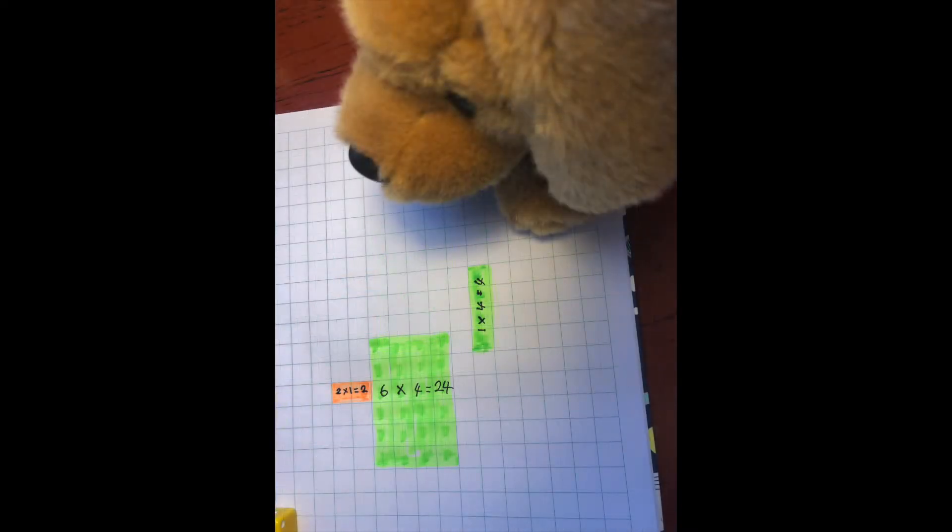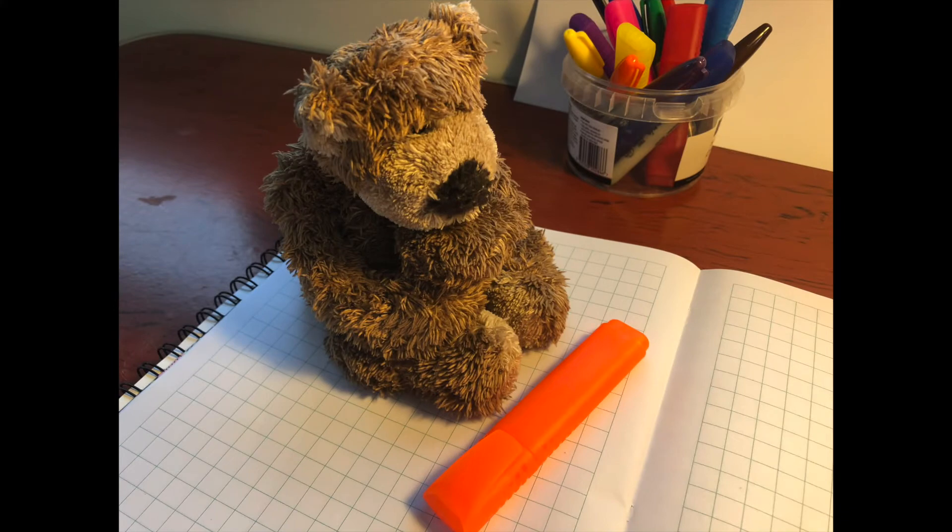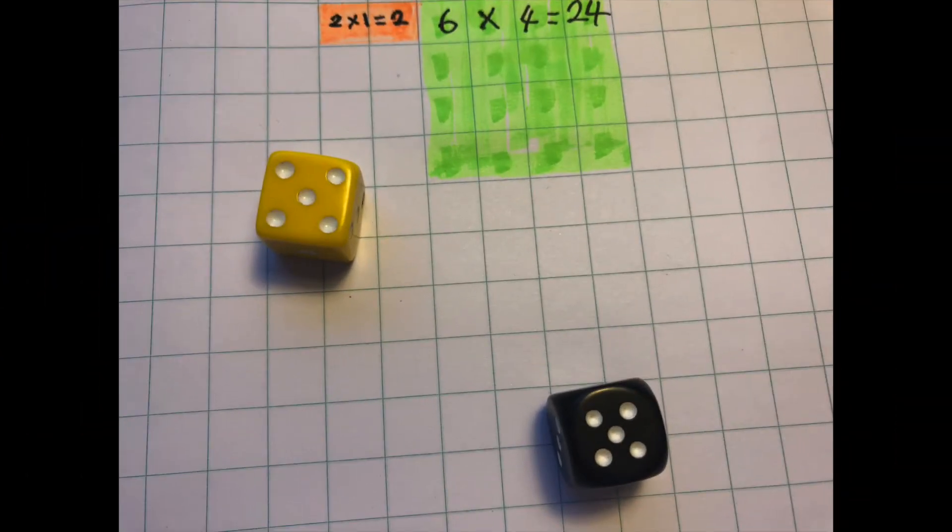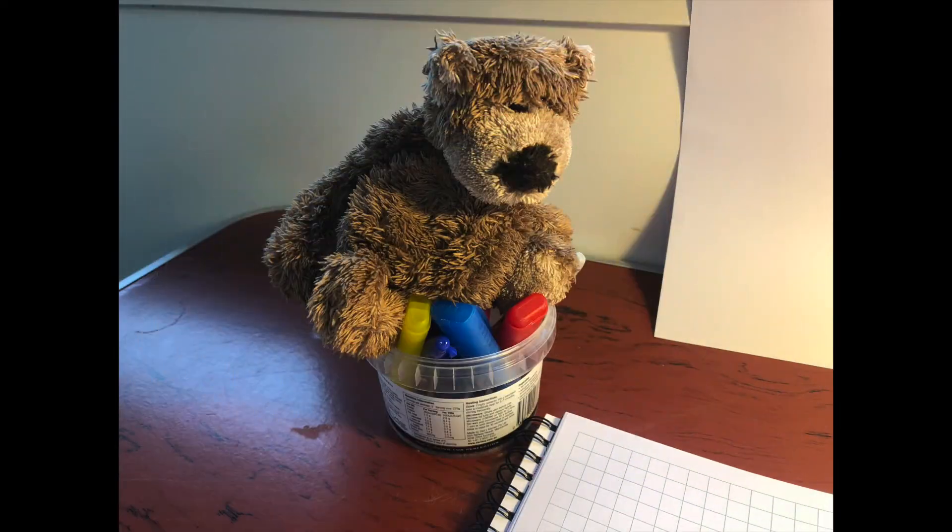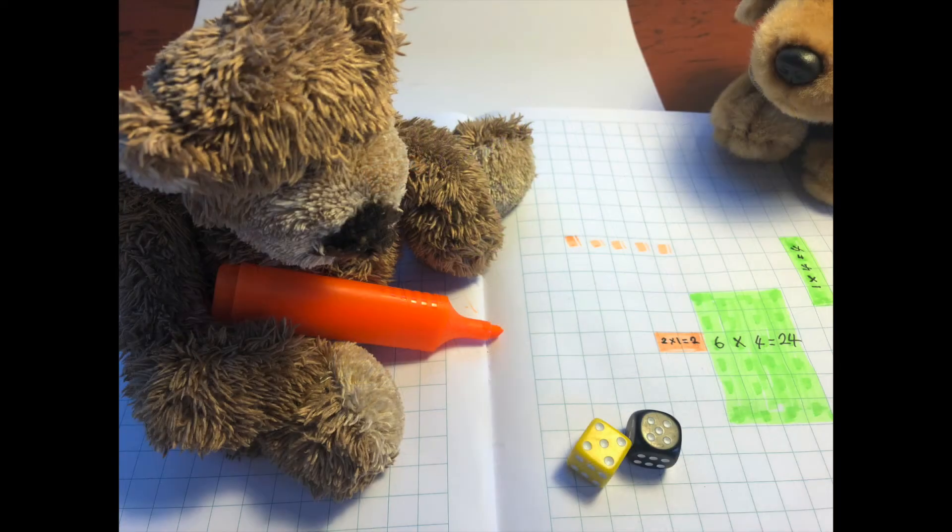Will it be Murphy's lucky turn this time? Murphy looks a little nervous. Two fives? That's great! Murphy looks excited about that. I wonder what his array will look like. What are you picturing?